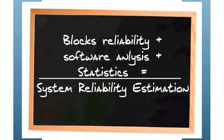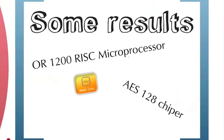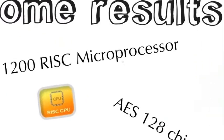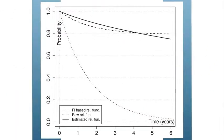In this paper, we show how it is possible to estimate the reliability of a complex system by combining the block's reliability profile and a detailed control and data flow analysis of the software into a statistical model. Our results have been very interesting. Our estimated reliability function is closely comparable with the one from a fault injection based reliability function. The dotted line is instead the reliability function of the microprocessor not considering the software.